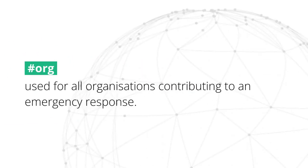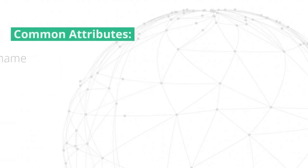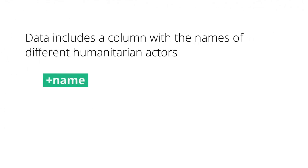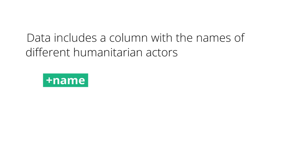Hashtag org is used for all organizations contributing to an emergency response. With the help of a few common attributes, you can easily refine the meaning of hashtag org to describe different types of data about humanitarian actors. Let's start with the basics. If your dataset has a column with the names of different humanitarian actors, you could use hashtag org and the attribute name to describe it.